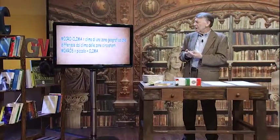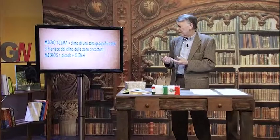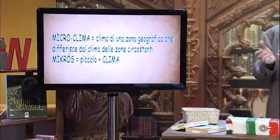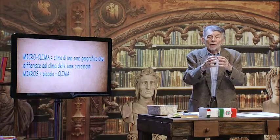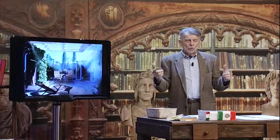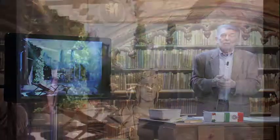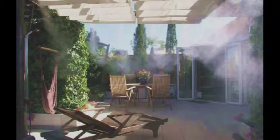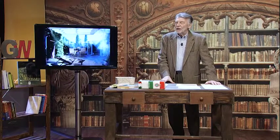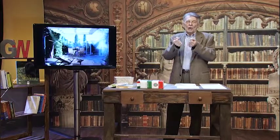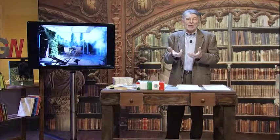Come ultima notazione, uno dei termini spesso usati è microclima. Il microclima è il clima di una zona geografica che differisce dal clima delle zone circostanti: una certa valle, un angolo di lago, una città in riva a un fiume può avere un microclima diverso dal clima generale. Lo usiamo anche nella nostra vita privata: qualcuno può dire 'il mio terrazzo ha un microclima particolare perché è più ombreggiato dei terrazzi dei vicini'. Così vediamo come noi utilizziamo anche le parole della scienza per la nostra vita quotidiana.